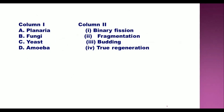Match the columns: Column 1 contains — Planaria, Fungi, Yeast, and Amoeba. Column 2 contains — asexual reproduction methods: binary fission, fragmentation, budding, and regeneration. Students need to match column 1 with column 2 correctly and rewrite the answers in the answer sheet.